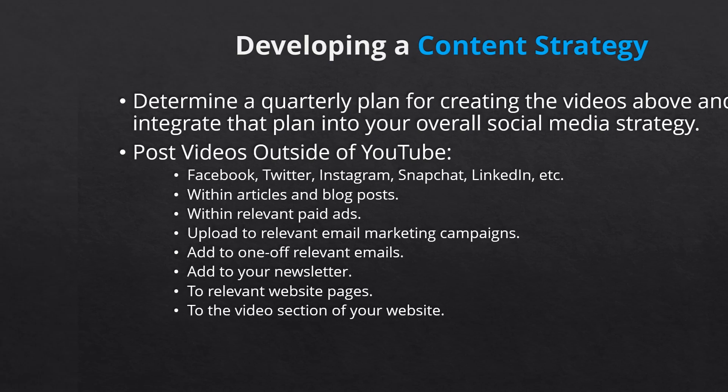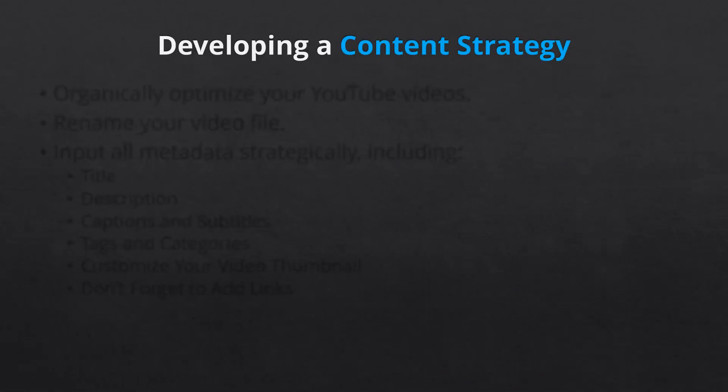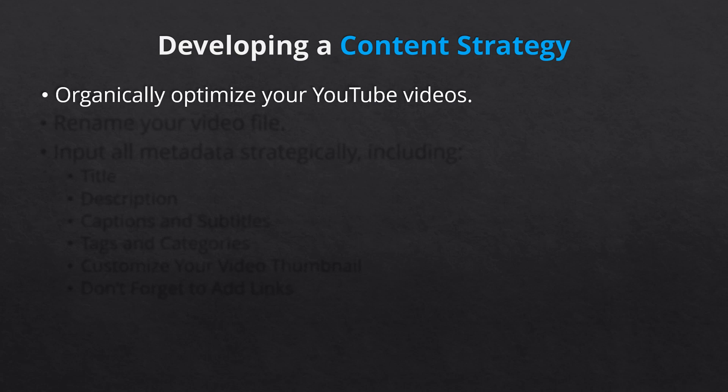Next up, organically optimize your YouTube videos. Before you upload a new video to YouTube, you must make sure it's organically optimized. First, there's renaming your video file. Before you upload your new video to YouTube, create an SEO-optimized file name. Use Google Trends or a paid keyword tool to name and save your video with relevant keywords. For example, 'the perfect smoky eye' is a better name than 'makeup tutorial number 12.'